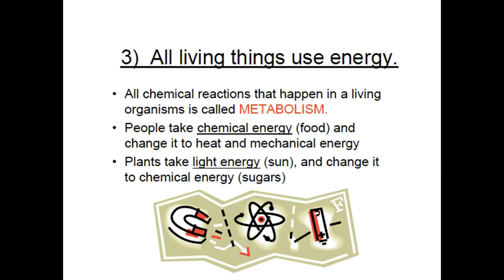The third characteristic of living things is that they use energy. The process of using energy inside a living organism is called metabolism. People take in chemical energy through food and change it to heat and mechanical energy. Mechanical energy is what allows you to pick up your pencil, pick up your books, or turn your head. Plants take in a different form of energy — light energy — and change it into chemical energy through the process of photosynthesis. Then they take those sugar compounds and break them down again for their own mechanical energy, cell division, growth, adaptation, and moving toward sunlight.